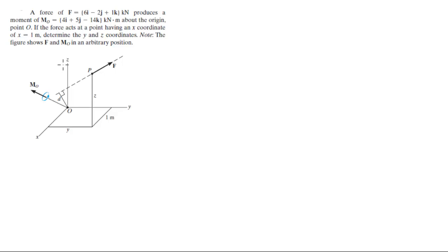If the force acts on this point P that sits at a certain coordinate where they only give you the x value which is 1 meter, find the y and the z coordinates where P is applied. So we're given F which is 6i minus 2j plus 1k.